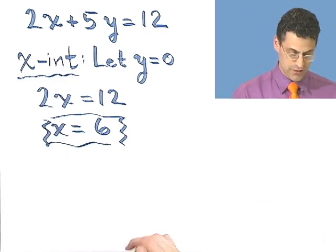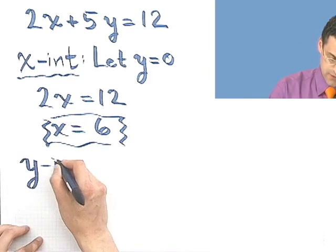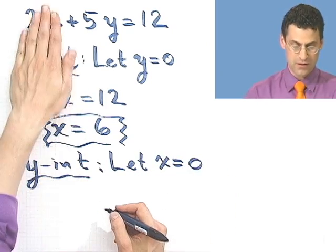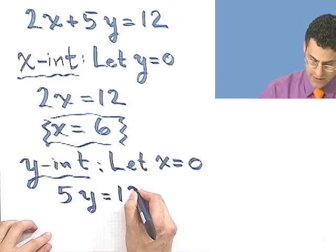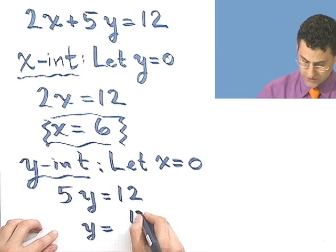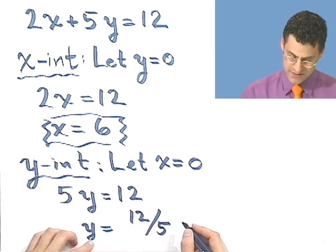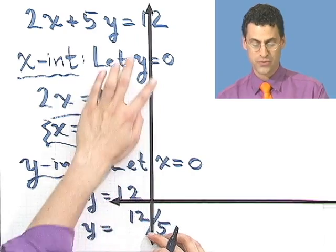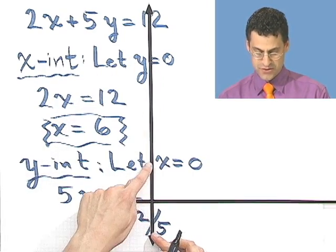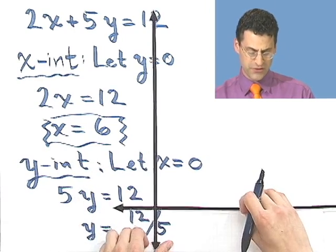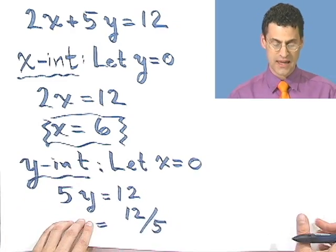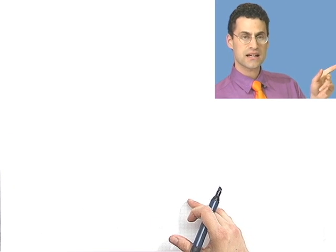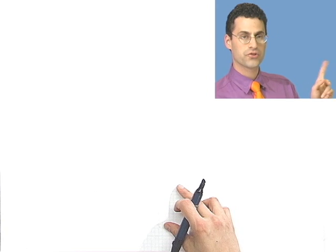What about the y-intercept? To find the y-intercept, I do the related thing — I let x be 0. If I let x be 0, then the x-term goes away and I see 5y equals 12, so y equals 12 over 5. That's about 2 and 2 fifths. So the x-intercept is at 6 and the y-intercept is at y equals 12 fifths.